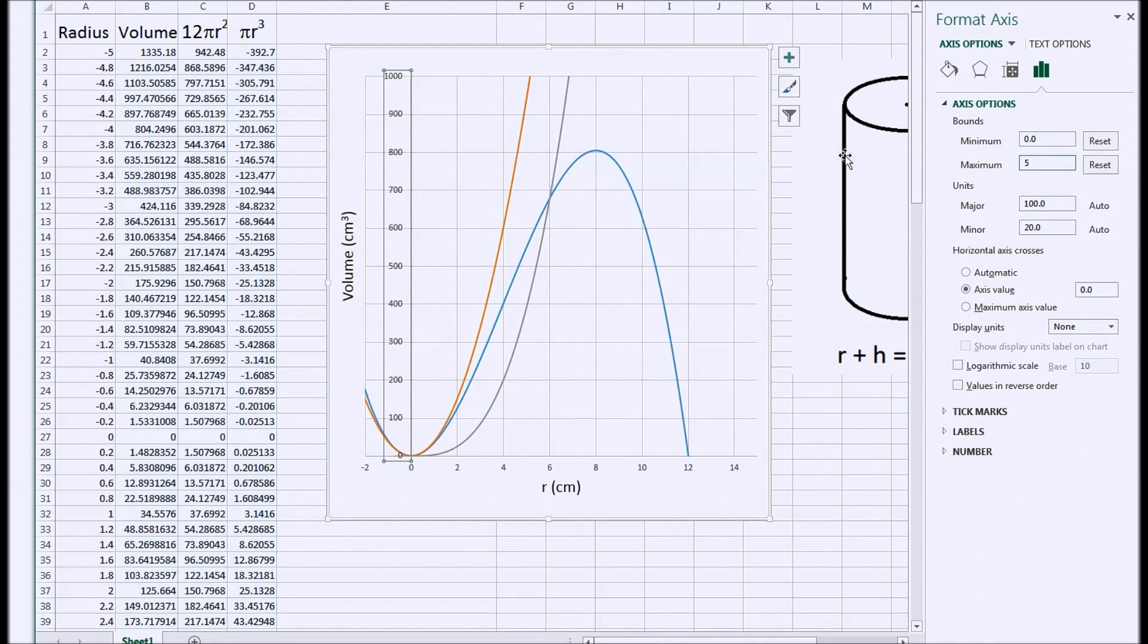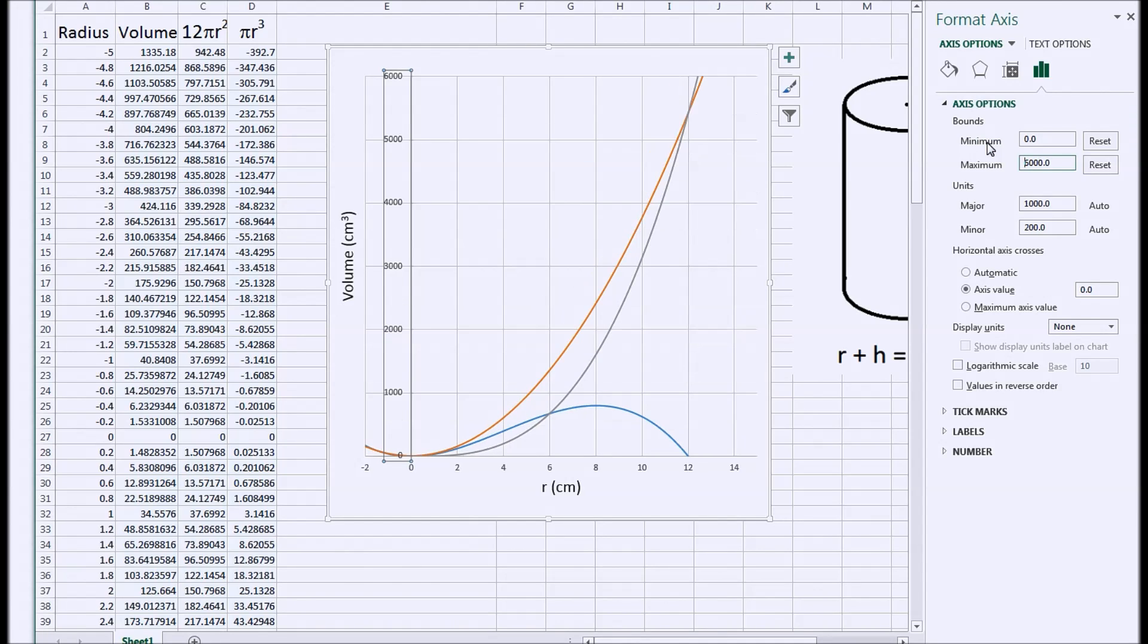Let me go up to 5,000. I think that might be enough. Let's go to 6,000. And you can see the two curves meet up. And of course, remember, it's 12 pi r squared minus pi r cubed. So they become equal and that's at 12 as you would expect.